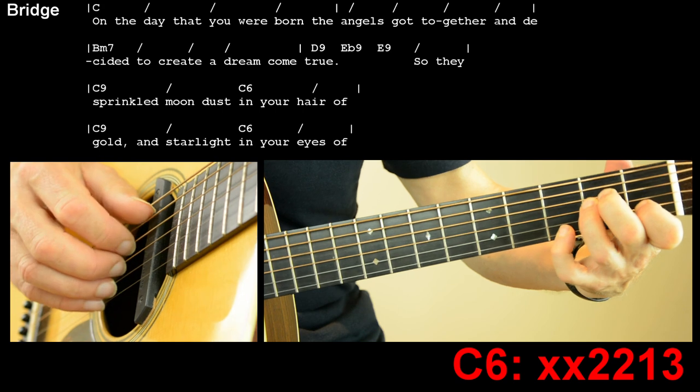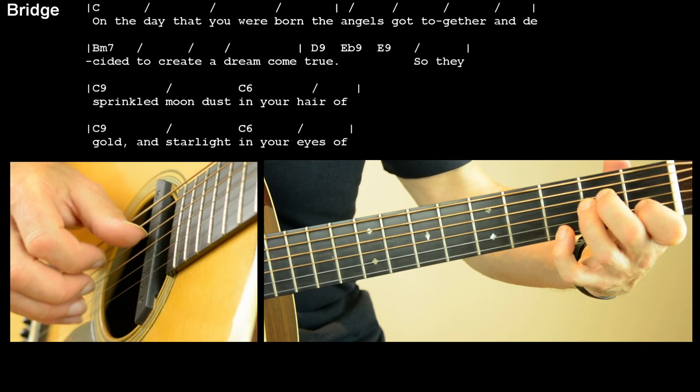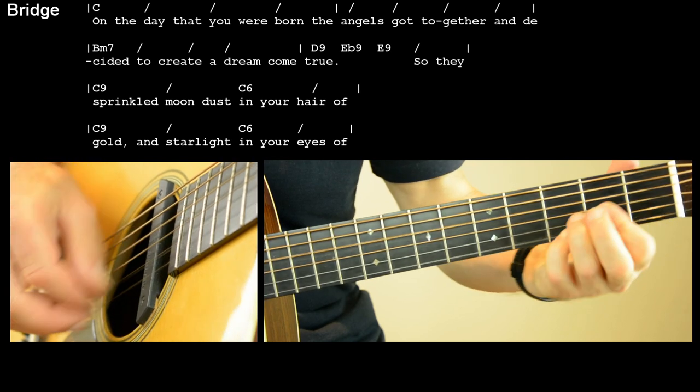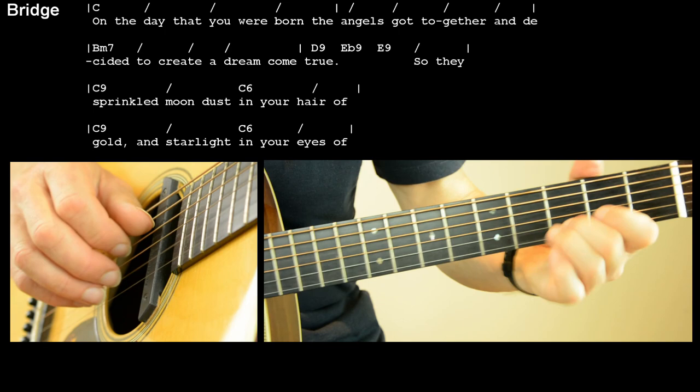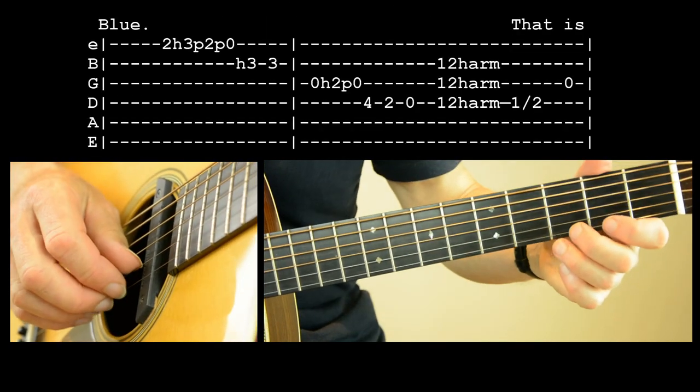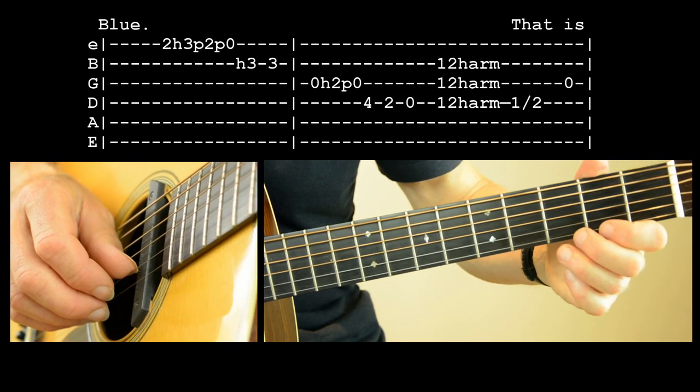So sprinkle so we're going to get back to these C ninth and C six. We're playing C sixth is like an A minor with a little finger thrown on the third fret of your top string.